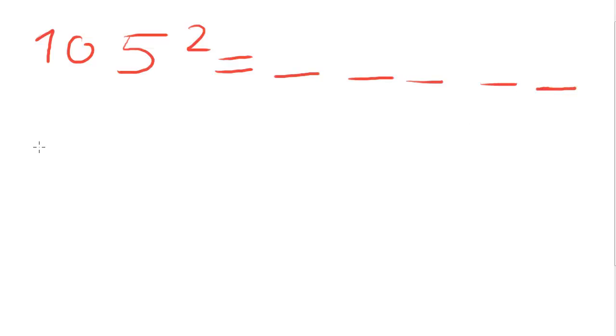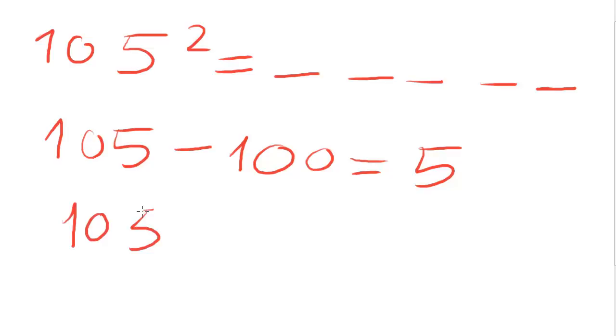First, we calculate the first three digits and make the difference between our number and one hundred. The difference is five. Now, make the addition between our number and five and the result is one hundred ten.